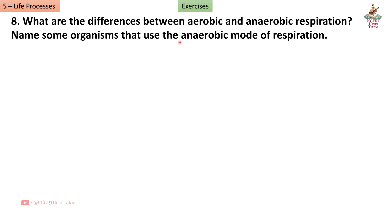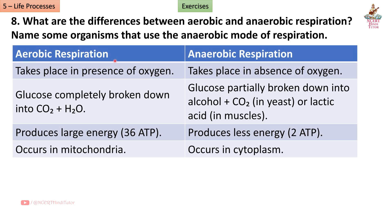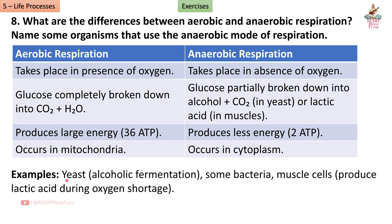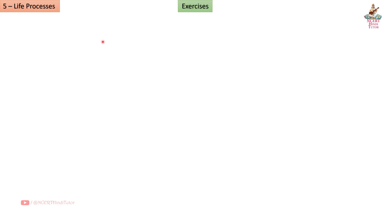Question 8: What are the differences between aerobic and anaerobic respiration? Name some organisms that use the anaerobic mode. Answer: Aerobic respiration takes place in the presence of oxygen; anaerobic takes place in the absence of oxygen. Aerobic: glucose is completely broken down into CO2 + H2O. Anaerobic: glucose is partially broken down into alcohol + CO2 (in yeast) or lactic acid (in muscles). Aerobic produces large energy (36 ATP); anaerobic produces less energy (2 ATP).